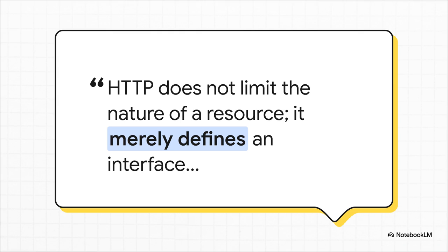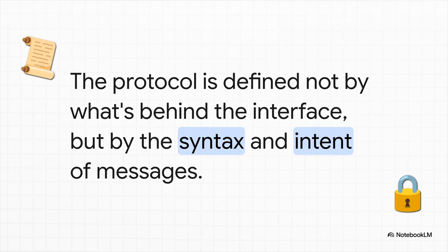Right from the get-go, the authors of the RFC give us this massive clue. HTTP is just an interface. Think of it like a window — it's how you look at and talk to a resource. It's not the resource itself. And for us as pen testers, that little separation is everything. It tells us that the real security isn't in the protocol. It's in how the server behind that window decides to handle our requests. But this interface isn't some chaotic free-for-all. It's got very specific rules. The RFC lays out the exact syntax and, more importantly, the intended use for all of our messages. But here's the catch: it doesn't control what the server actually does with them. And that gap — the gap between the official rules and the real-world implementation — that's our playground.